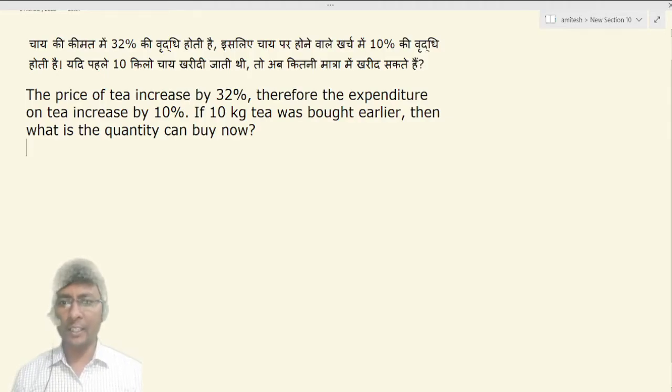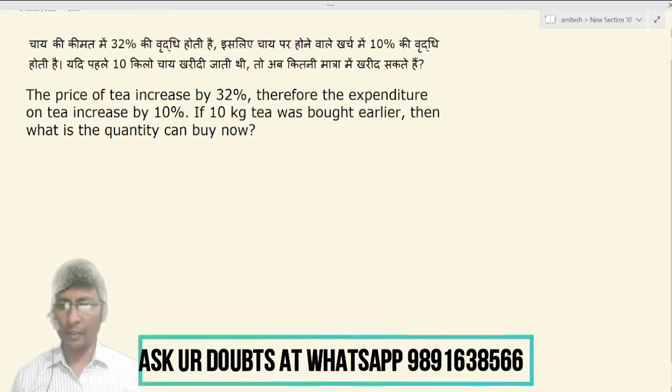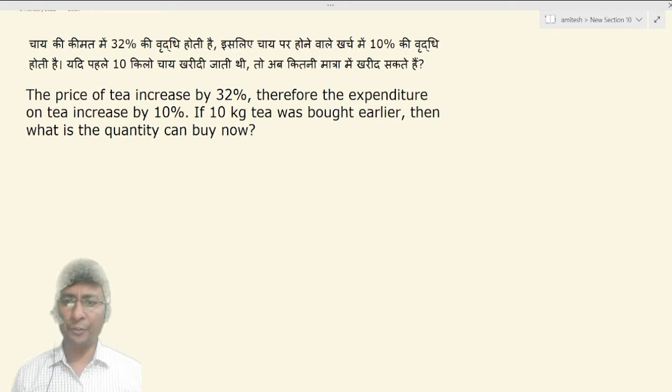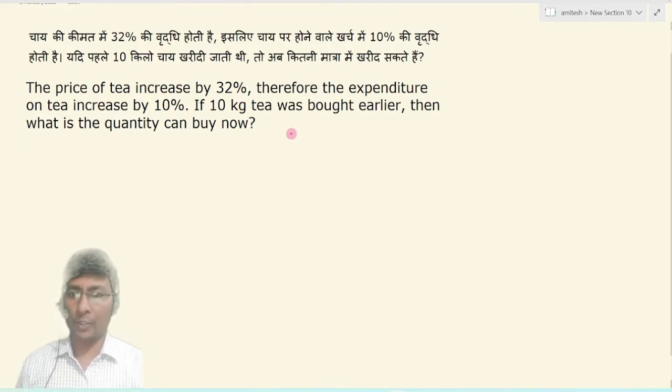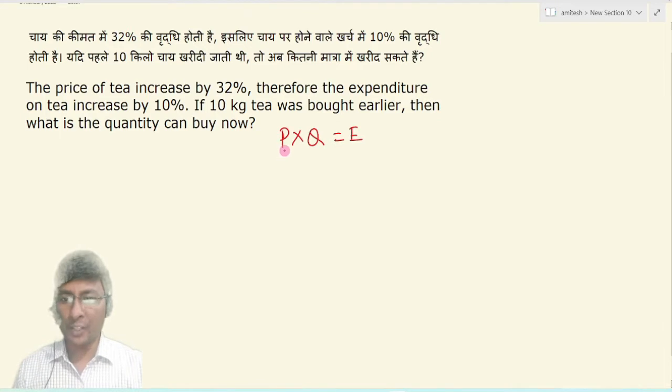The price of tea increased by 32 percent, therefore the expenditure on tea increased by 10 percent. If 10 kg tea was bought earlier, then what is the quantity can buy now? Take it simply: price into quantity is equal to expenditure.